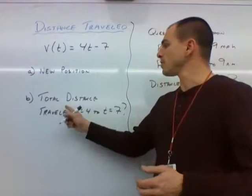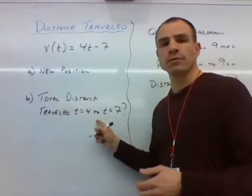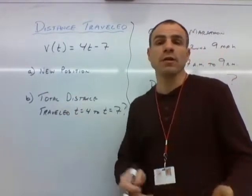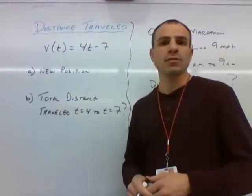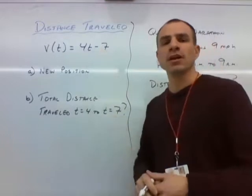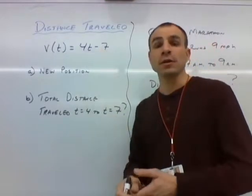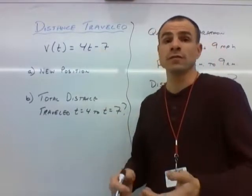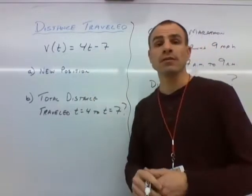Now if we're interested in the total distance traveled from t equals 4 to 7, we know what the answer is. We found it in part d. It's a total of 45 units. So how do we get the 45 units from the velocity function? We were able to get the 45 units using the position function. How do we get it from the velocity function?